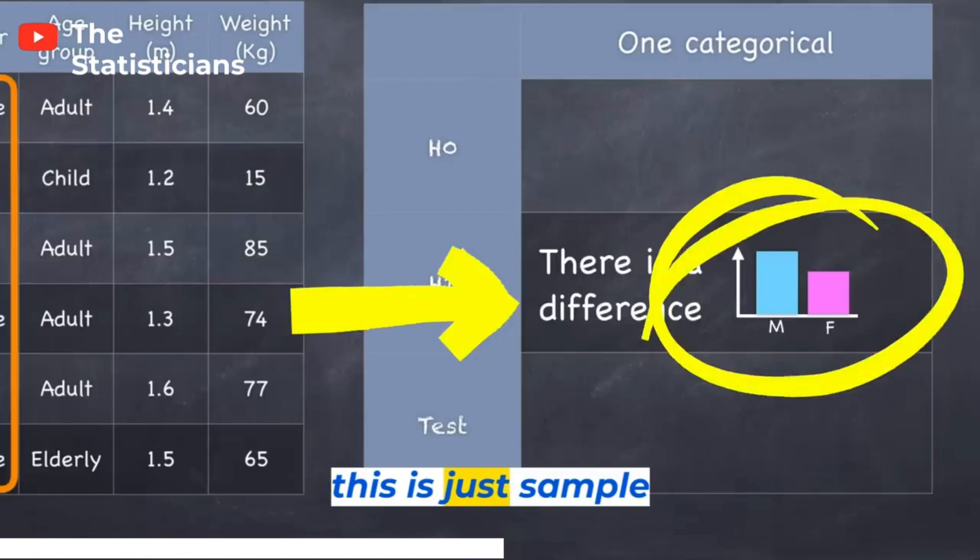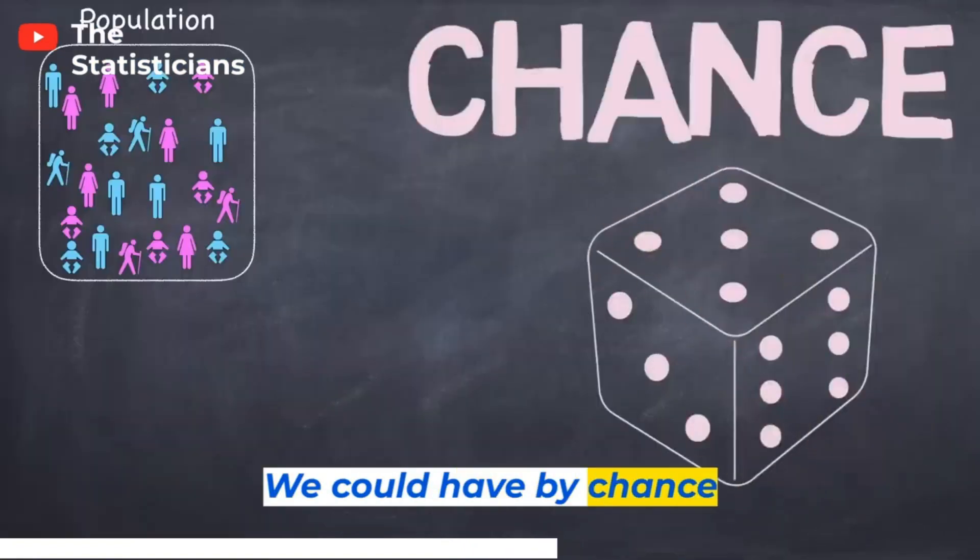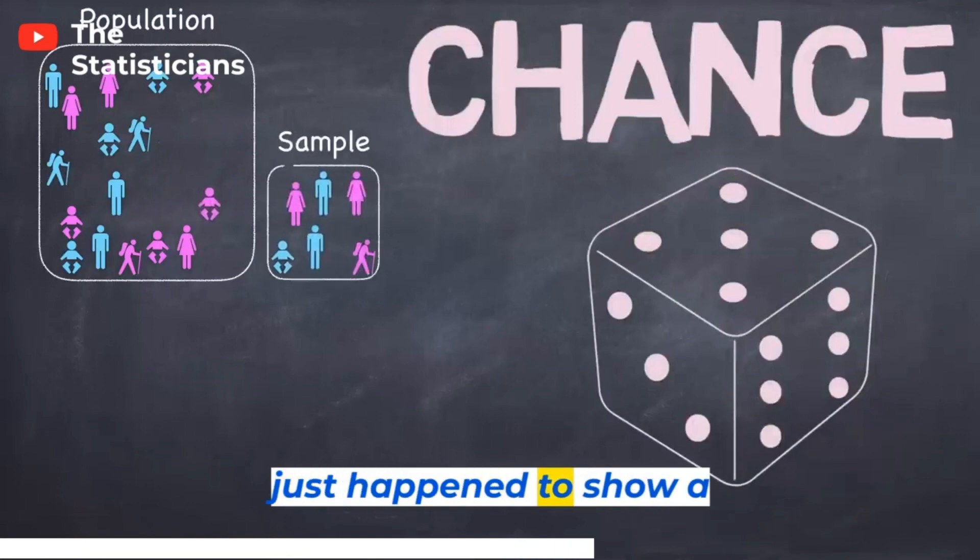Remember, this is just sample data. We could have by chance selected a sample that just happened to show a difference.